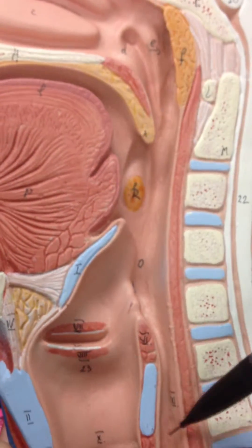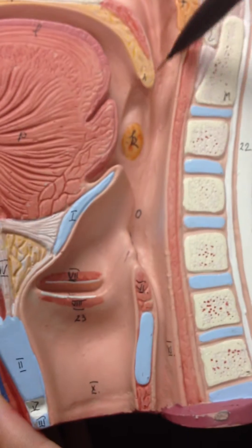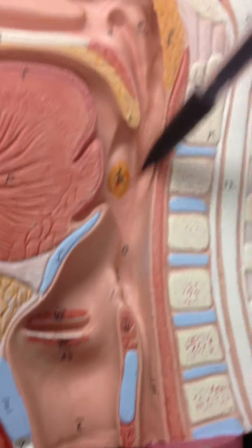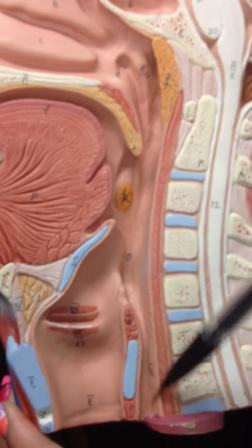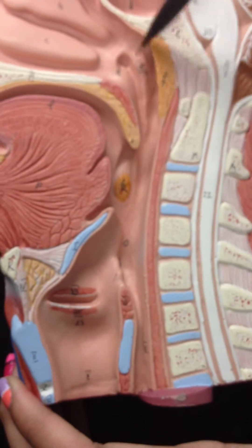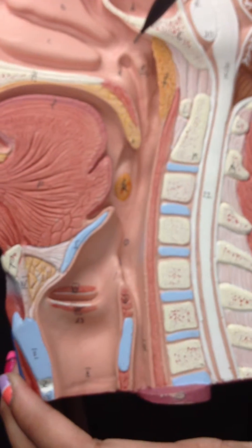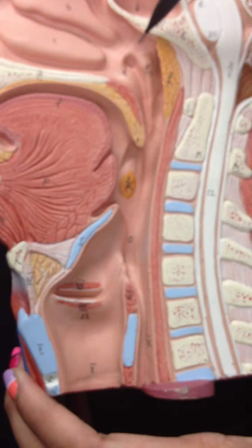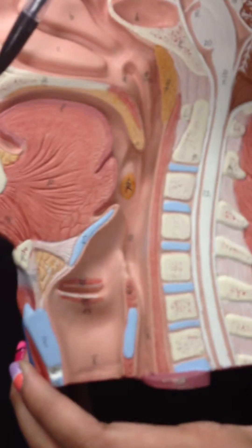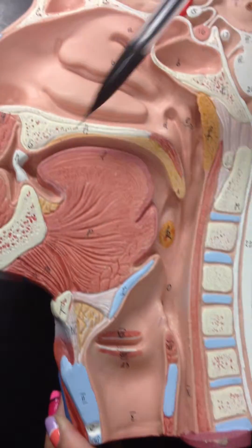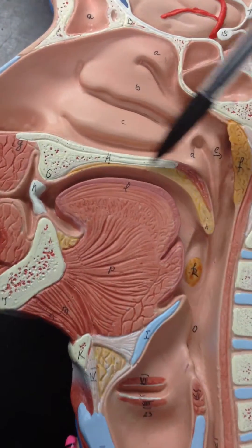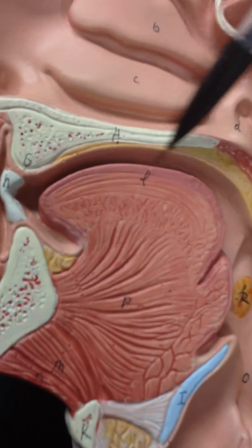And then the pharynx is right here — this whole thing is the pharynx. And this is the oral cavity right here.